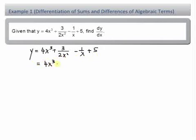I have 4x cubed plus 3 over 2, bring the power x squared, becomes x power negative 2. Minus, I have a 1 here, and then x power on, bring it up I have x power negative 1 plus 5. So I can find my first derivative dy/dx by differentiating every single term here.